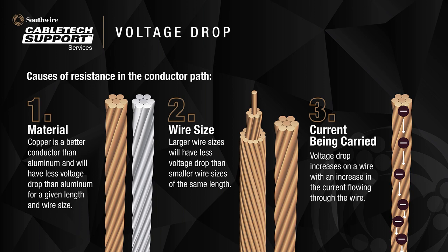Let's review the causes of resistance in the conductor path. First, the material — copper or aluminum. Copper is a better conductor and will have less voltage drop than aluminum for a given length and wire size. Second, the wire size — larger wire sizes will have less voltage drop than smaller wire sizes of the same length. Third, the current being carried — the voltage drop increases on a wire with an increase in the current flowing through the wire.